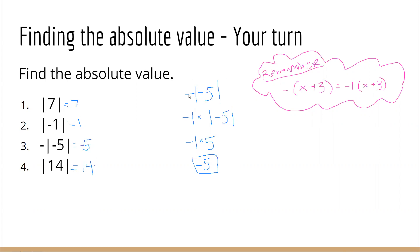So this is our original problem: negative absolute value of negative five. How I'm going to look at that is I'm going to push the negative to the side by adding a one in front of it, so we've got negative one times the absolute value of negative five. If you remember back to sixth grade when you learned about the distributive property, you might have seen a negative on the outside of parentheses — you're doing the same exact thing here, just with an absolute value symbol instead of parentheses. So we solve the absolute value of negative five, which is five, then multiply by negative one, giving us negative five.